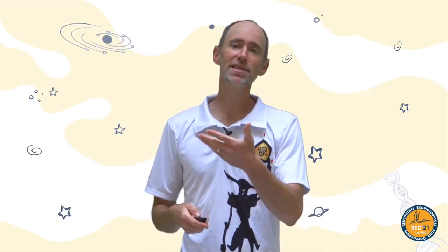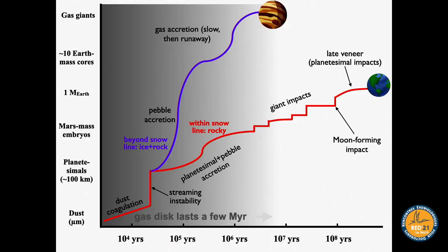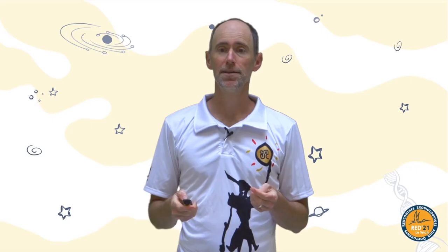This goes back to the simple picture of trying to put together the puzzle pieces for how Earth and Jupiter grew — the general cartoon of the growth trajectory we have in mind. Now let's look in more detail at how we build models that actually match the inner solar system, focusing carefully on the constraints.